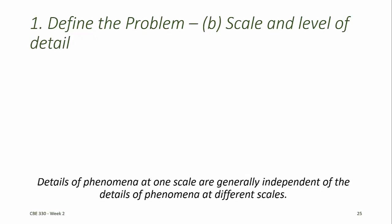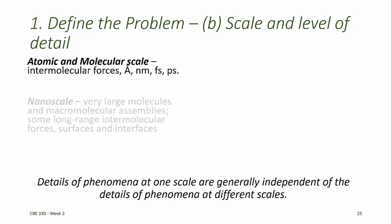The second step to defining the problem is to select the scale and level of detail of the model. Commonly used scales for chemical and biological process models include the atomic and molecular scale, in which we describe intermolecular forces, typically length scales at angstroms and nanometers, and time scales at femtoseconds and picoseconds.